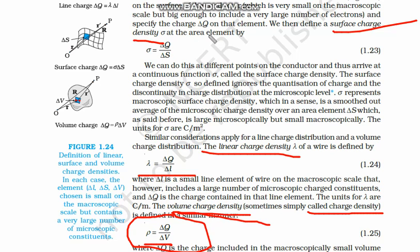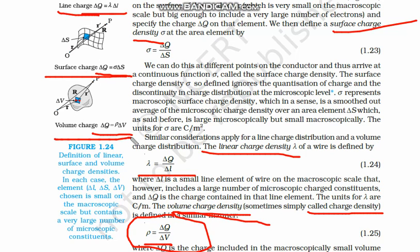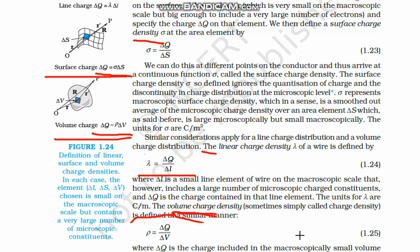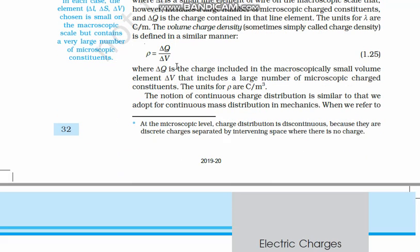We have three different types of charge density. From these definitions: delta-q equals rho times delta-V for volume charge; delta-q equals sigma times delta-S for surface charge; and delta-q equals lambda times delta-l for line charge. We are simply dividing the small charge delta-q by either the surface, volume, or line element.